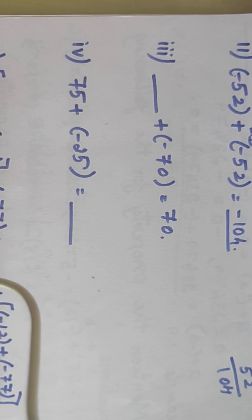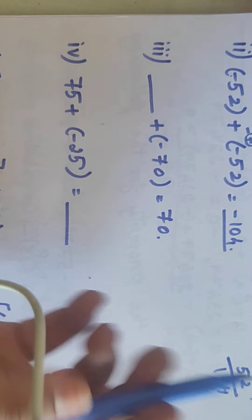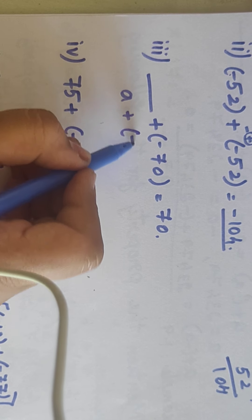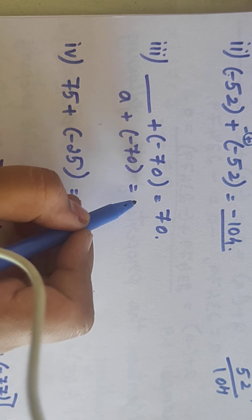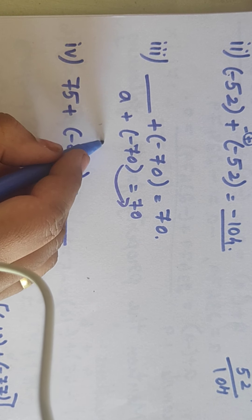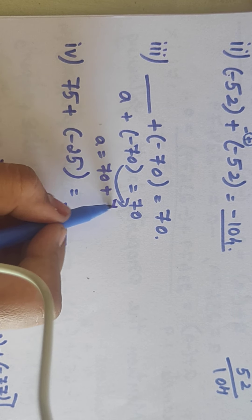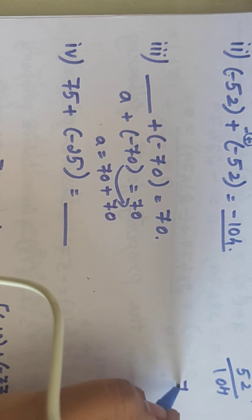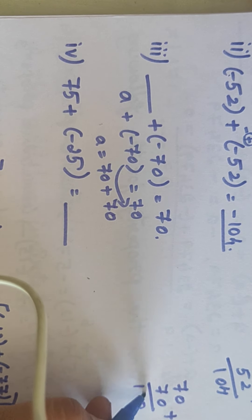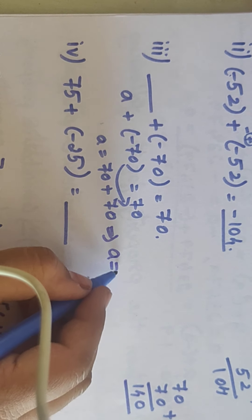Third one: dash plus (-70) equals 70. As usual, give the dash a name A. So A plus (-70) equals 70. Change minus 70 to the other side — it becomes plus 70. So A equals 70 plus 70. Now 0, and 7 plus 7 is 14, so A equals 140.